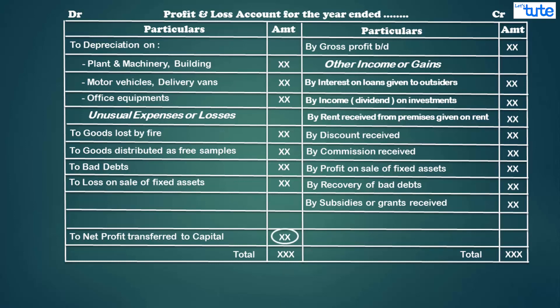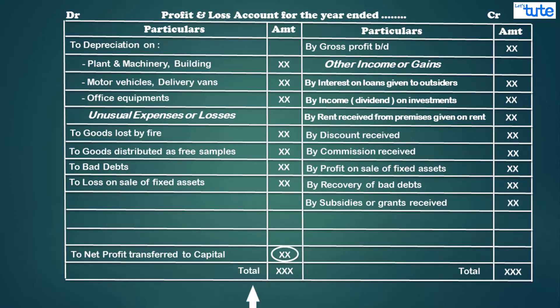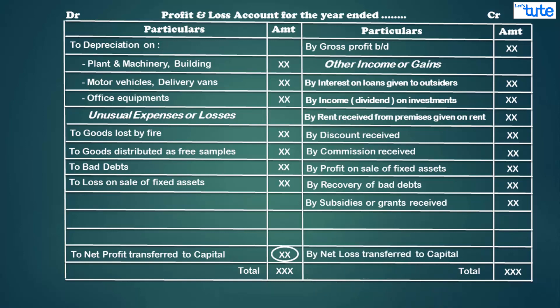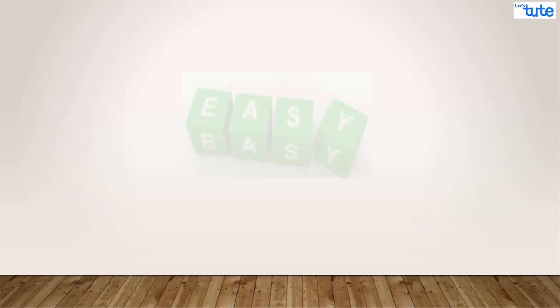If the debit side is bigger, expenses exceed income — this is known as net loss. In case of net loss, there can be no appropriations. The net loss amount is written on the credit side of the profit and loss account and transferred to the debit side of the capital account. Appropriation means the amount transferred out of net profits for paying income tax or creating reserves — for example, reserves for contingencies — and these appear on the debit side of the profit and loss account.